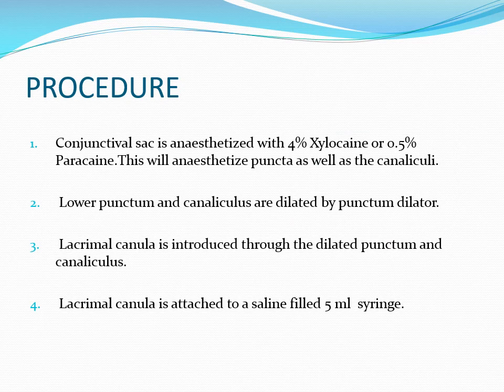Explaining the procedure: the conjunctival sac is anesthetized with 4% xylocaine or 1.5% proparacaine. This will anesthetize the puncta as well as the canaliculi. The lower punctum and canaliculi are dilated with the help of the punctum dilator. Then the lacrimal cannula is introduced through the dilated punctum and canaliculi. This lacrimal cannula is attached to a saline-filled 5 ml syringe.